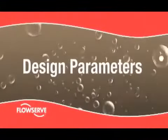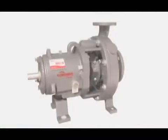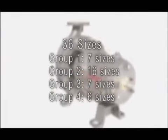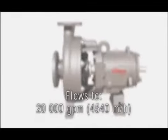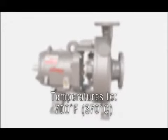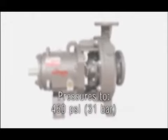Design parameters. The FlowServe Durco Mark III is available in 36 sizes, from Group I low-flow, high-head designs to Group IV high-capacity models. The Mark III handles flows to 20,000 gallons per minute, heads to 700 feet, temperatures to 700 degrees Fahrenheit, and working pressures to 450 PSI.